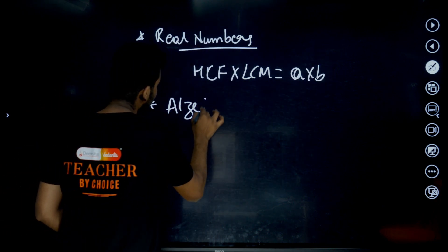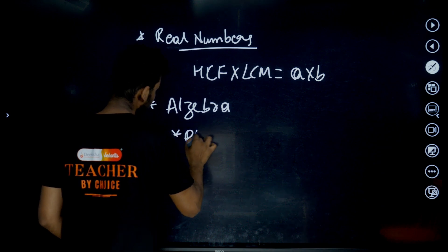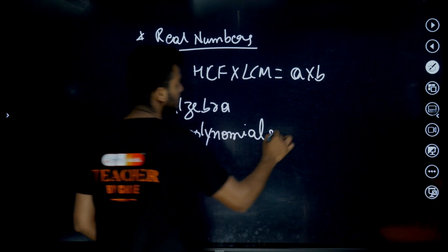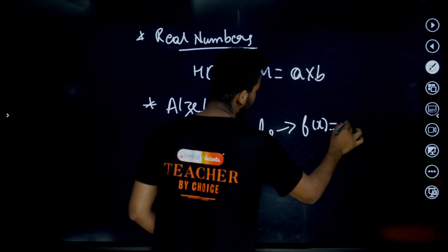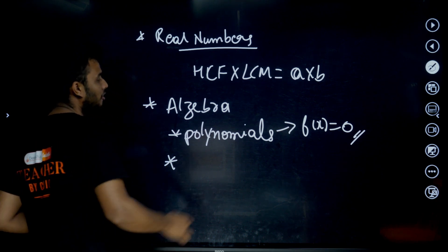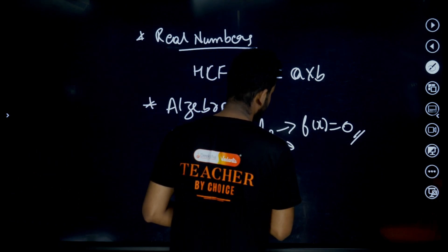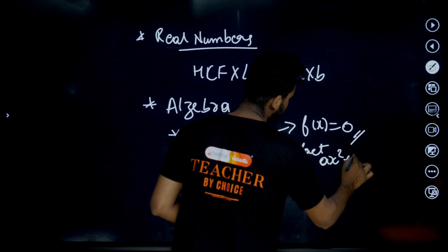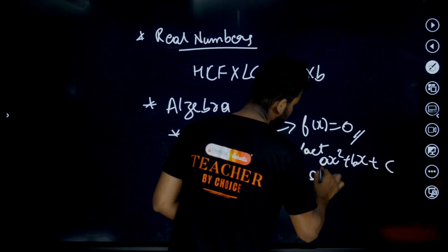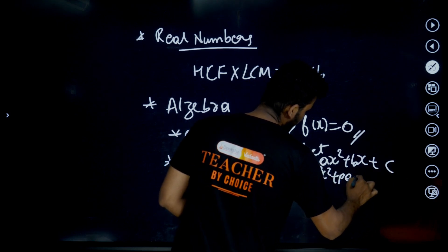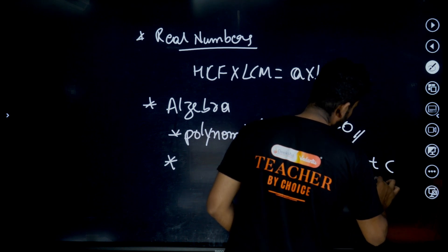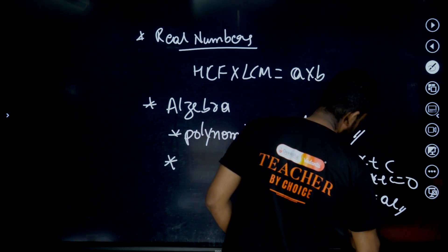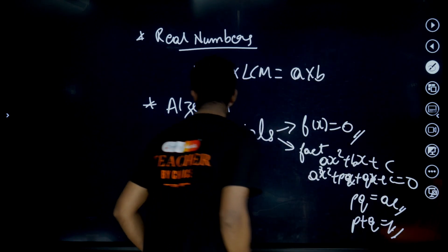Next, move on to algebra — polynomials. f(x) = 0, that is very important. For quadratic factorization method: if we have Ax² + Bx + C, split the midterm as Ax² + Px + Qx + C = 0, where P × Q must equal AC and P + Q equals B. Polynomial is done.